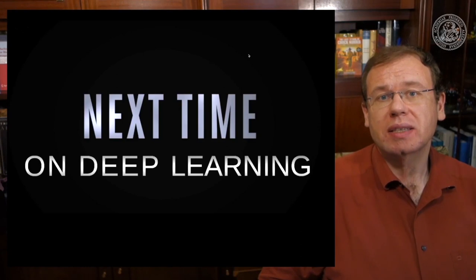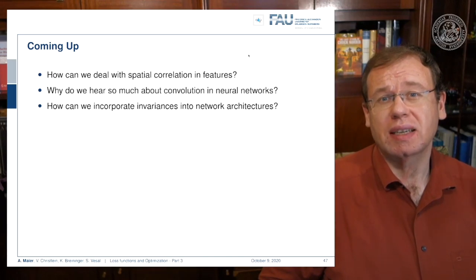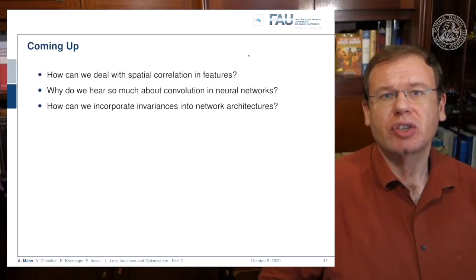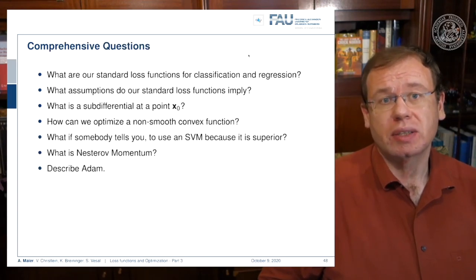Okay, this brings us to a short outlook on the next couple of videos and what we are coming up with. Of course the actual deep learning part—we haven't discussed this at all. One problem that we still need to talk about is how we can deal with spatial correlation in features. We hear so much about convolution and neural networks. Next time we will see why this is a good idea and how it is implemented with, say, image recognition or something like that. Of course one thing that we should think about is how to use variances and how to incorporate them into network architectures.